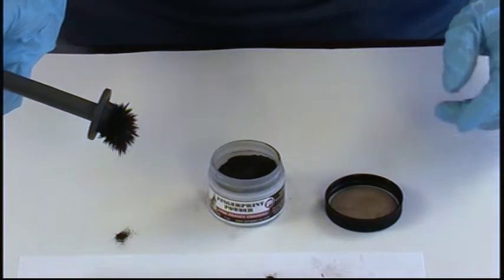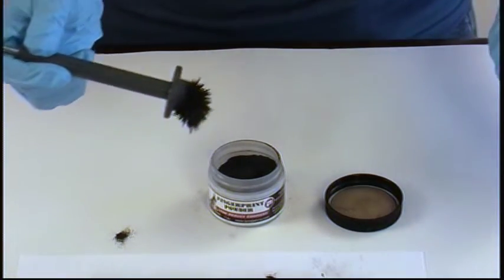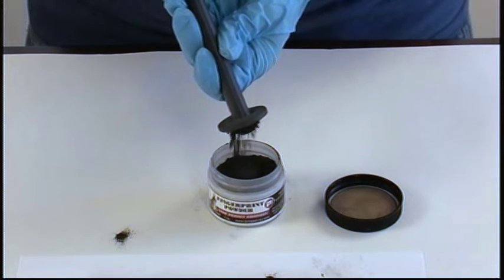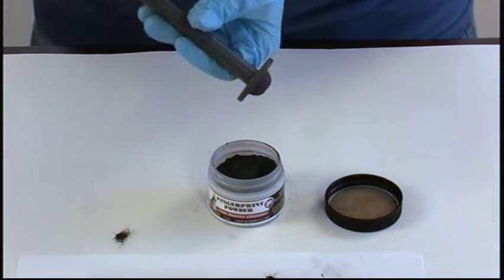You can see this is developing nicely and that looks good. Now that we've finished developing our print, let's put the rest of this back into the pot. Hold it right over the top, pull up on the plunger, see how it all falls off.